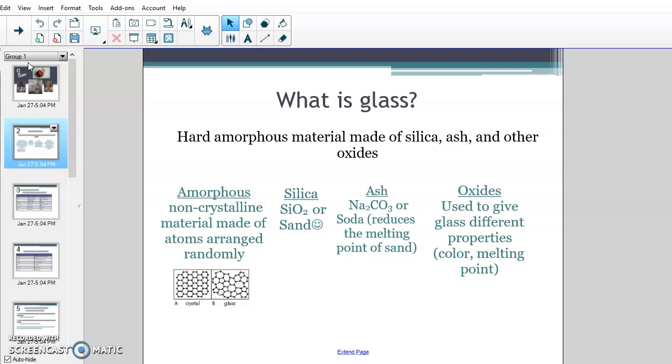Glass is a hard amorphous material made of silica, ash, and other oxides. Silica is basically a fancy name for sand. So obviously glass is made of sand, and then ash, also called soda ash, is basically sodium carbon and oxygen. It's a compound that reduces the melting point of sand in order to make the glass, and then the different oxides that you add to it give the glass different properties - colored glass, melting points, strength, etc.